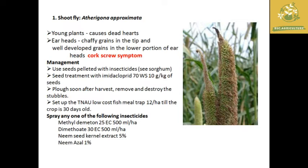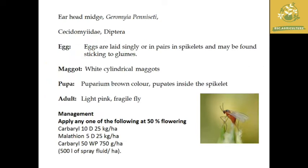The next pest is the earhead midge, with scientific name Geromia penicata, belonging to the family Cecidomyiidae under Diptera. Regarding biology: eggs are laid singly in pairs of spikelets, forming a gummy stickiness in the spikelets and producing a webbing-like formation at that point. The maggots are white and cylindrical. The puparium is brown in color and pupates inside the spikelet. The adults are light pink and fragile flies.